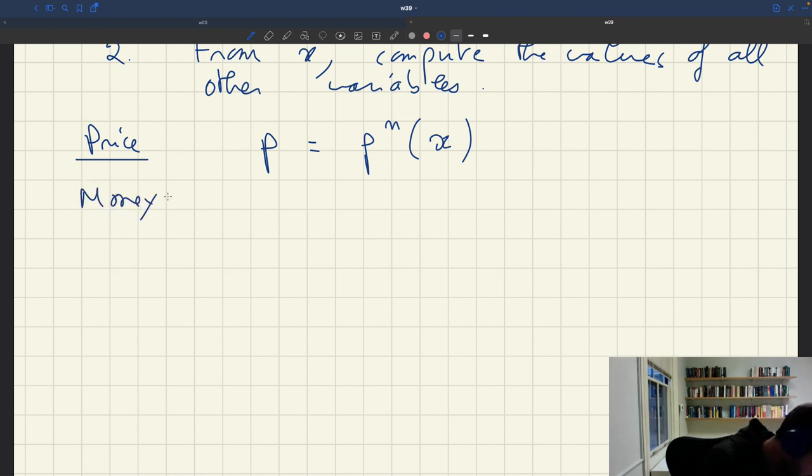How can I back out money holdings? Well, this is easy. M is just equal to μ, the amount of money. So that's taken care of. We don't even need tightness for that.